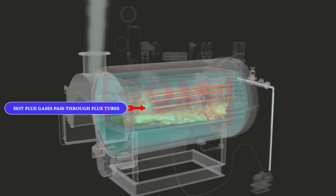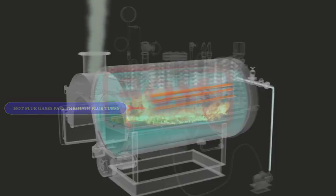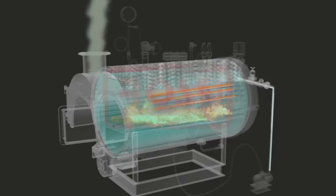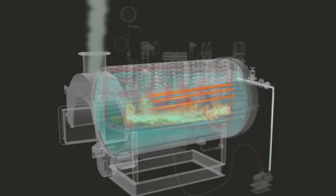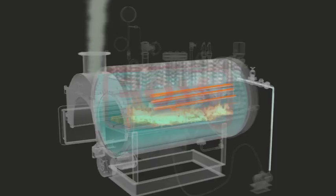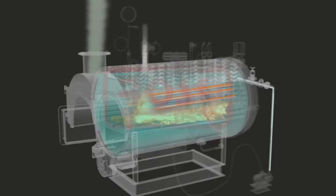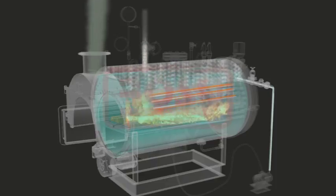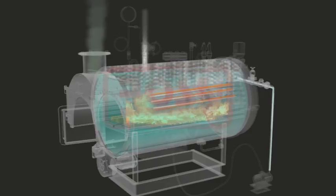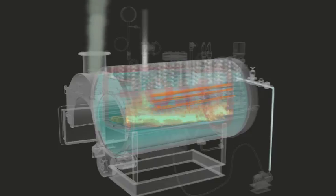Steam is generated in the boiler shell and its pressure builds up gradually. When normal operating pressure is reached, the steam outlet valve is opened to supply steam to the process. Pressure of outlet steam is regulated through on-off operation of the ID fan.